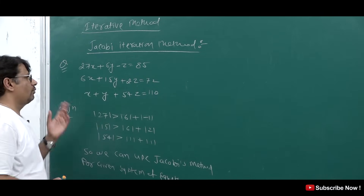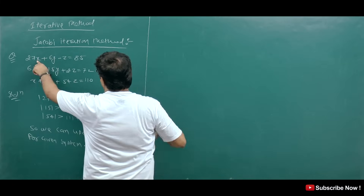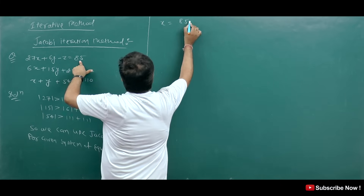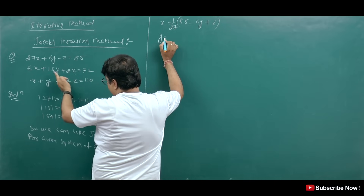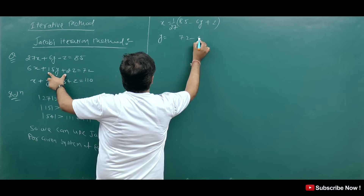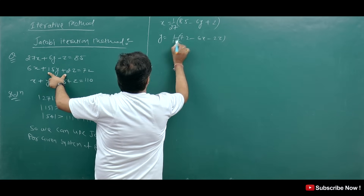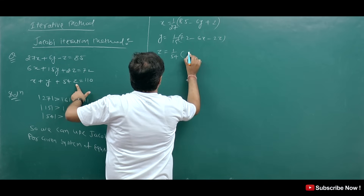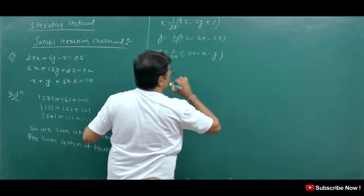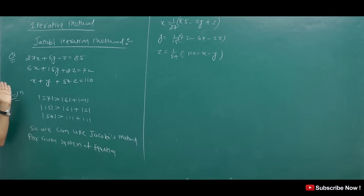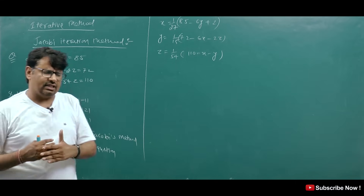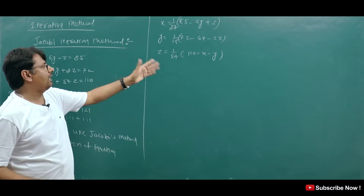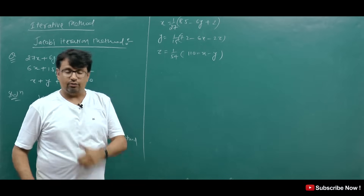So here is how we solve it step by step. From the first equation, keep x on the left and take the rest to the right, so x = (1/27)(85 − 6y + z). For y, we get y = (1/15)(72 − 6x − 2z). Then for z, we get z = (1/54)(110 − x − y). The larger coefficient in the denominator makes convergence faster.